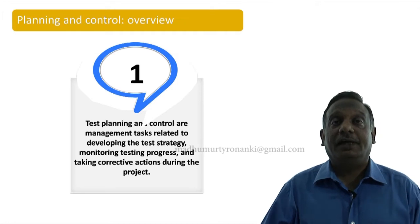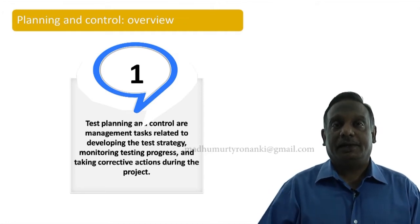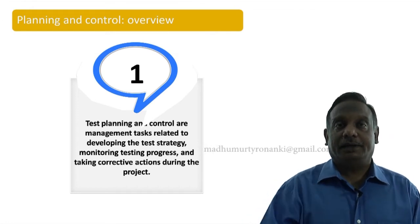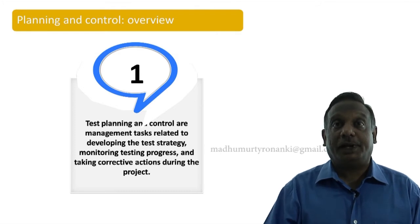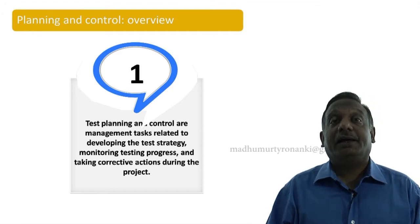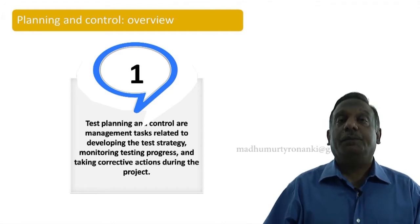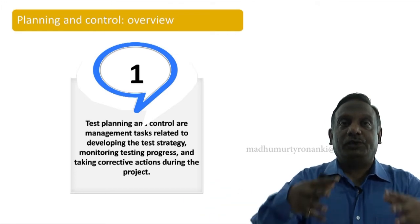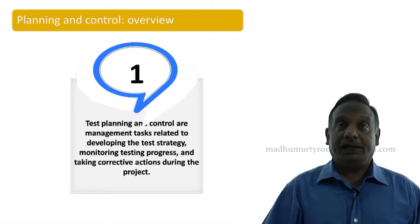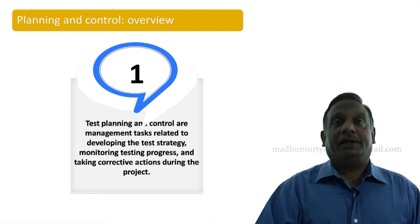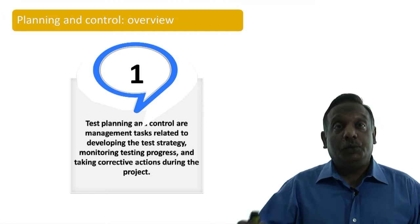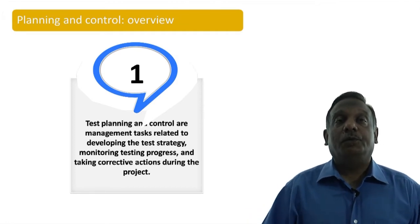Monitor — the other word is observe — the progress we are making in the project, and look at whether we are meeting as per the project test plan or not. If we are not meeting, we have to take certain corrective actions during the project. All these activities we categorize under test planning and control activities, and this is a very important activity which has to be done extremely well. Then only you can do the testing project in a good manner.